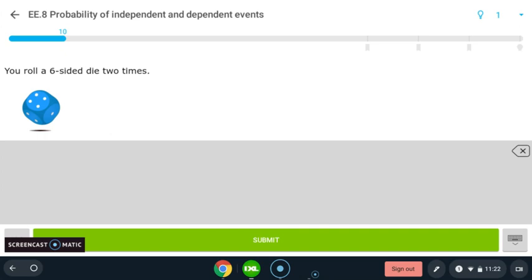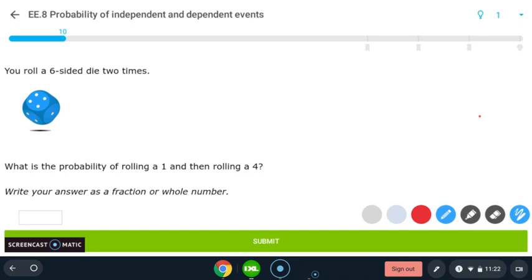Okay, so here, now we've got a die. And so this is going to be an example of an independent event, because our first roll does not affect the second roll. So we rolled it two times, that's helpful to know. And then it says, what is the probability of rolling a one, and then rolling a four.